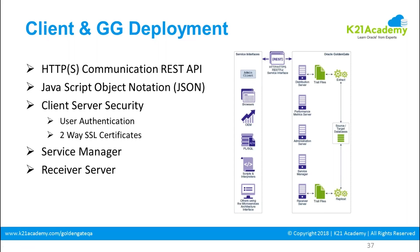To connect to Golden Gate, you use the admin client. Using admin client, you connect via APIs to the distribution server, see trail files, performance metrics server, administration servers, service manager, and receiver server. This is how your data flow is organized.